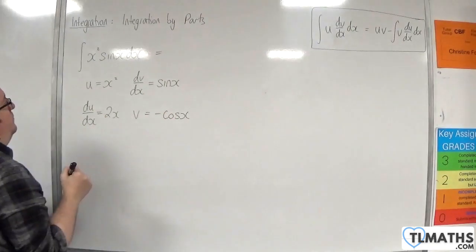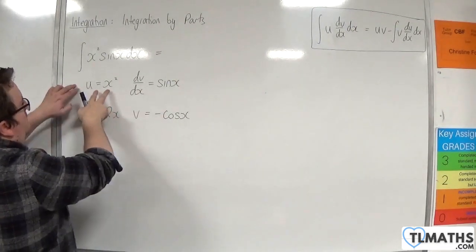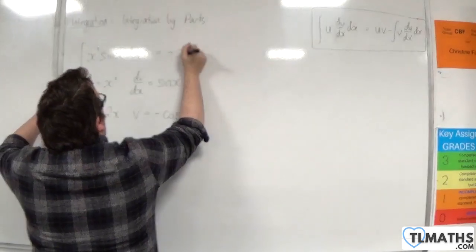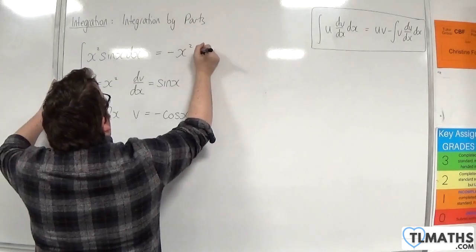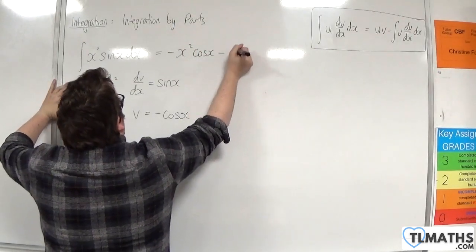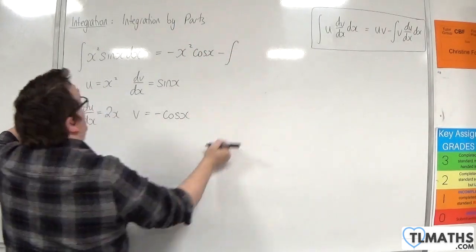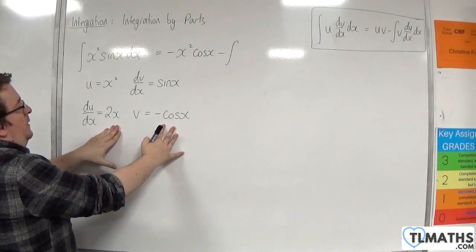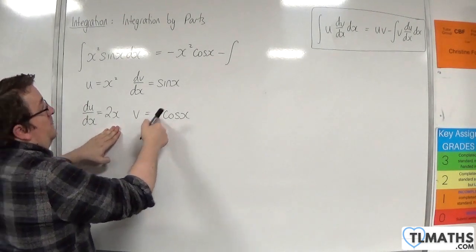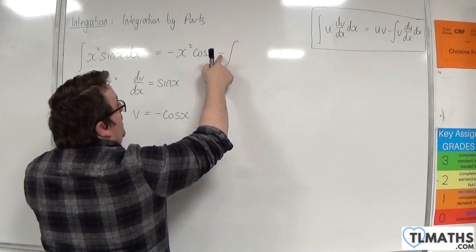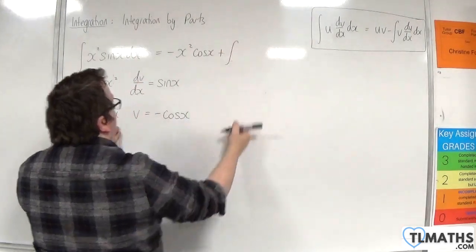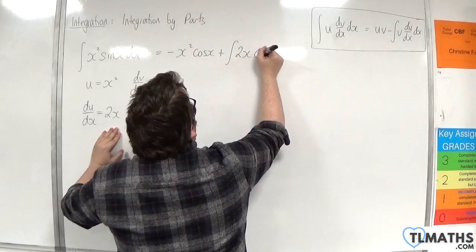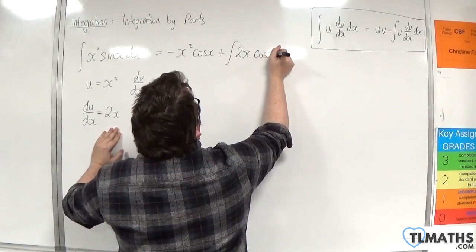So using the formula, u times v gives us minus x squared cosine x, take away the integral of v times du by dx. Now we've got a minus sign there which knocks out the other minus sign, so we can turn that into a plus, and we'll have the integral of 2x cosine x dx.